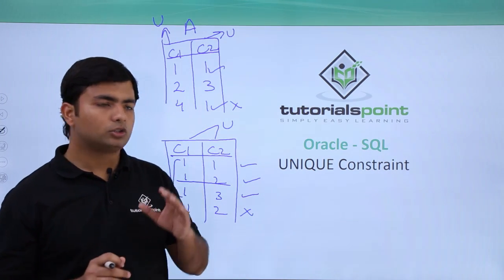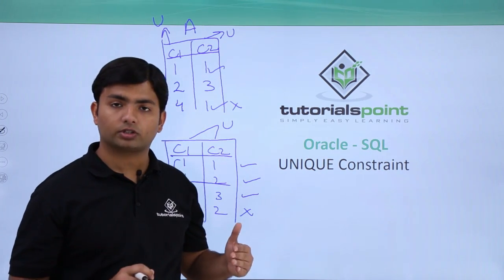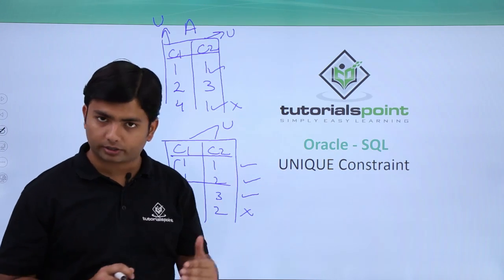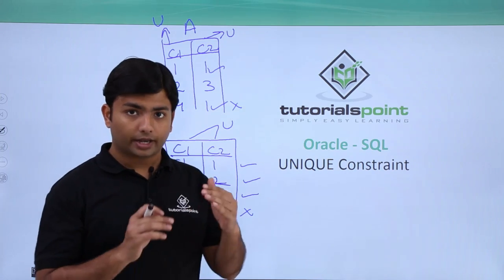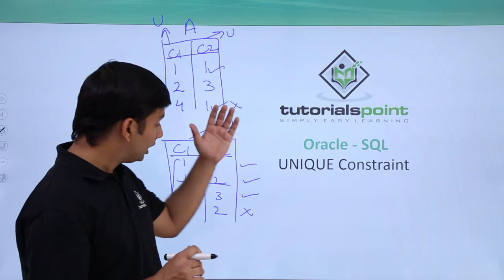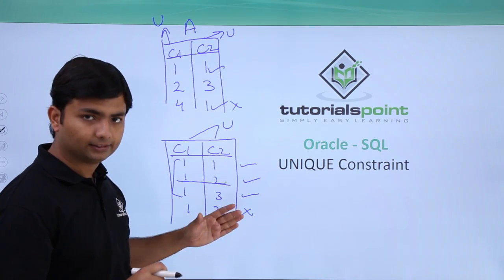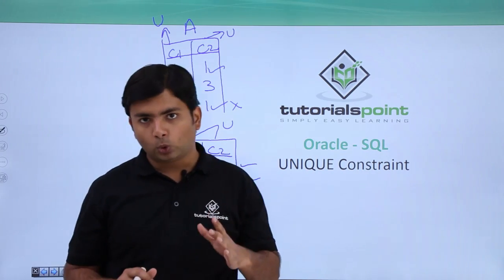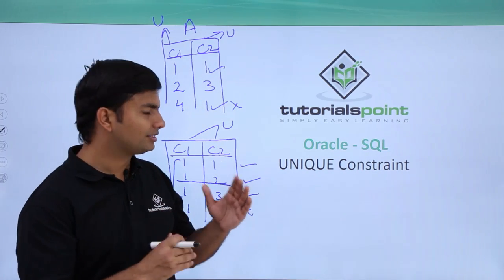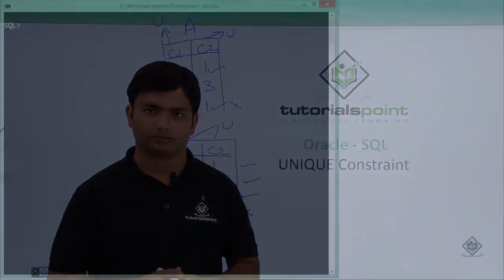So whenever you add the unique constraint at the table level and pass multiple columns into it, combination uniqueness is enforced rather than individual column uniqueness. Let's now see how we can start working with the unique constraint practically.